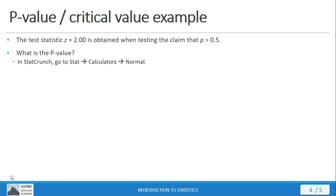So, the first thing we're going to do is go to StatCrunch, go to Stat, Calculators, Normal. Why are we using the normal distribution? Because our test statistic is a z-score, and z-scores come from the standard normal distribution.